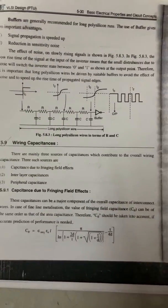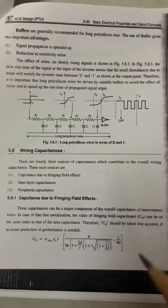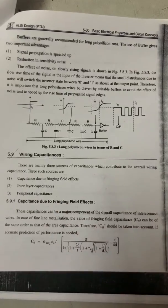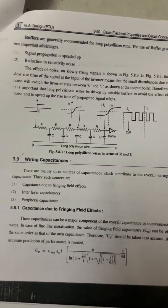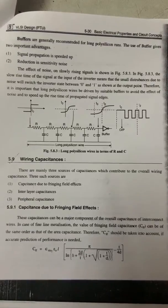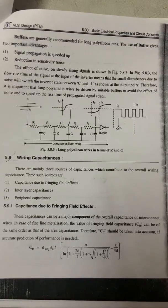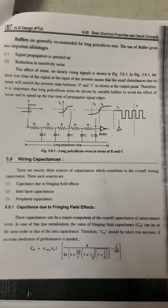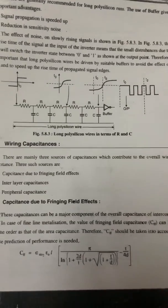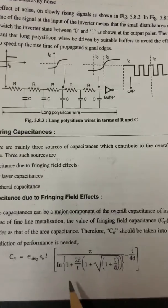The next topic is wiring capacitance. There are mainly three sources of capacitance contributing to the overall wiring capacitance: first, capacitance due to fringing field effects; second, interlayer capacitance; third, peripheral capacitance. Regarding fringing field capacitance, it can be a major component of overall capacitance of interconnect wires in fine line metallization. The value of fringing field capacitance Cff can be of the same order as the area capacitance, so Cff should be taken into account for accurate performance prediction.